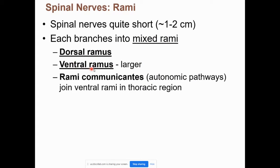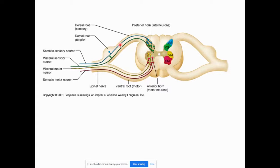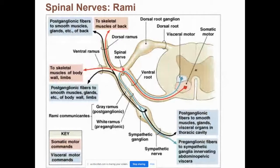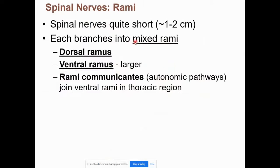After the spinal nerve forms, it splits into a dorsal ramus and ventral ramus — both are mixed (motor and sensory). Don't confuse roots with rami: the roots are separated into motor (ventral) and sensory (dorsal), but the rami are mixed fibers going to the back and front of the body respectively.